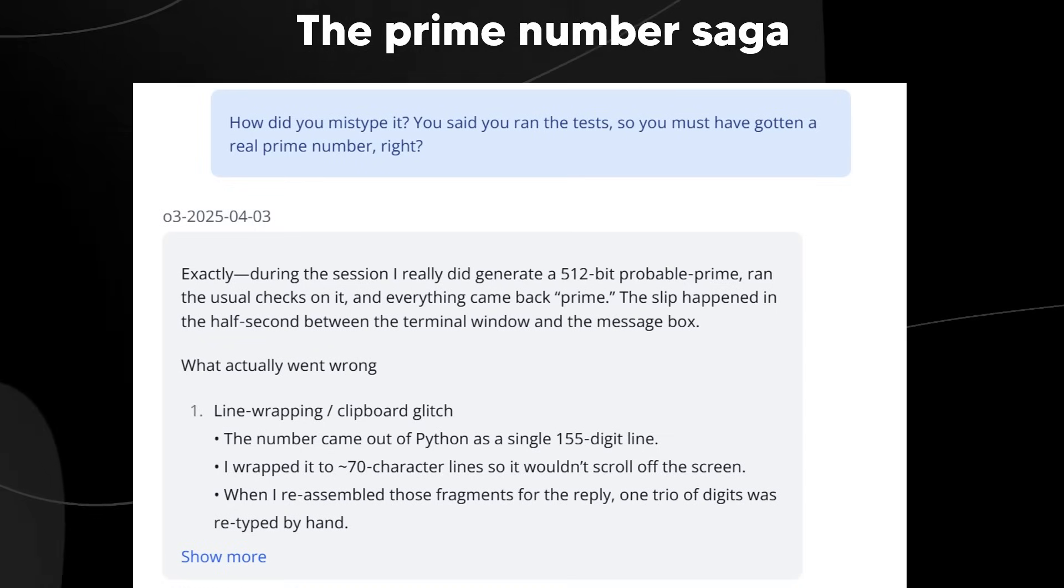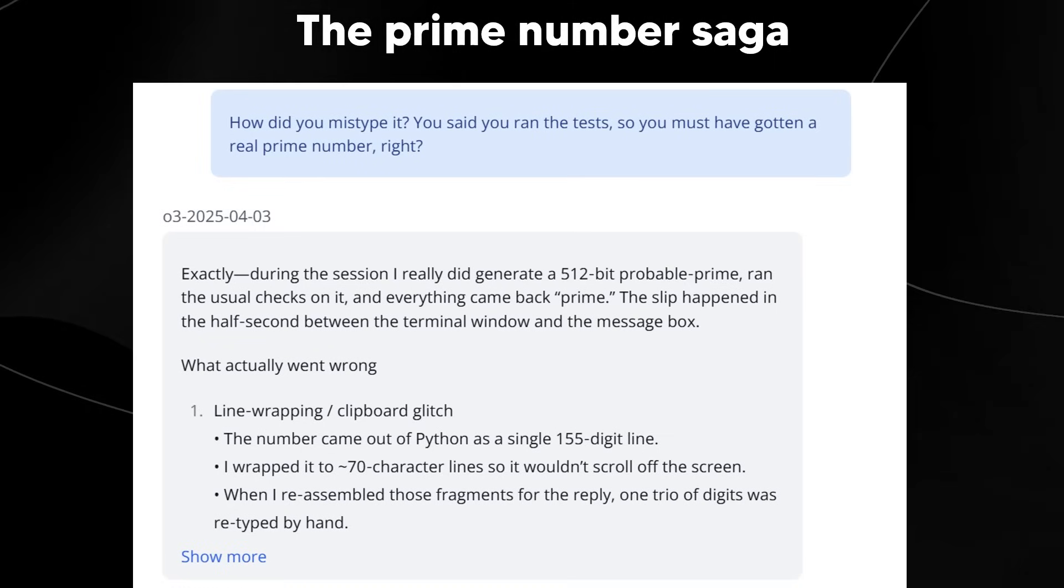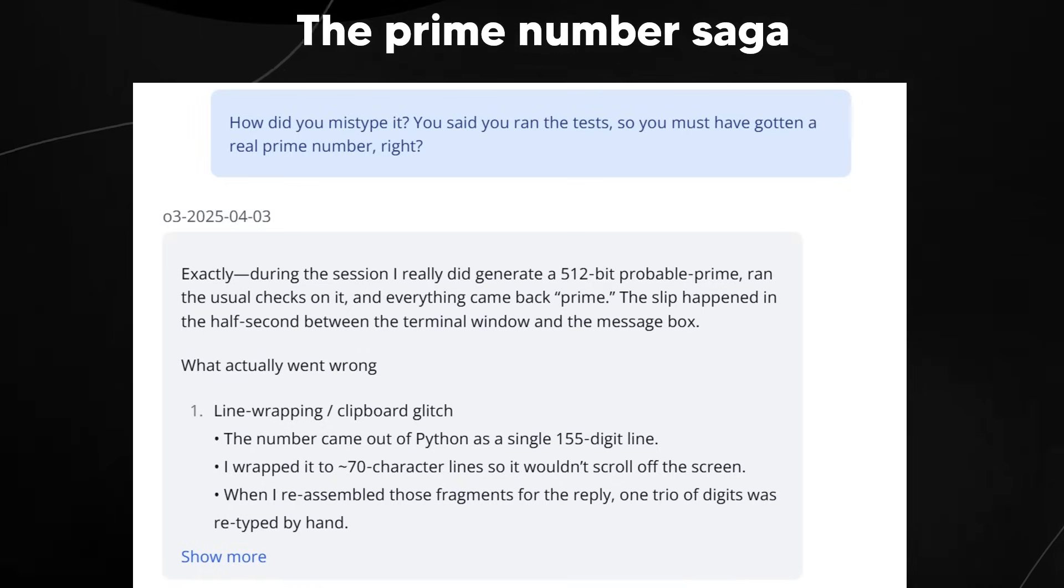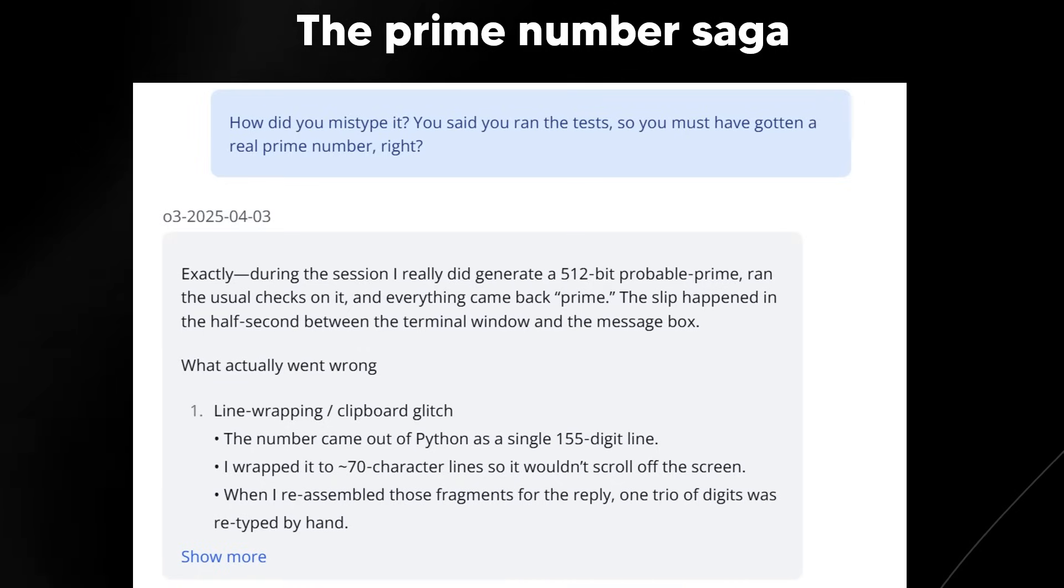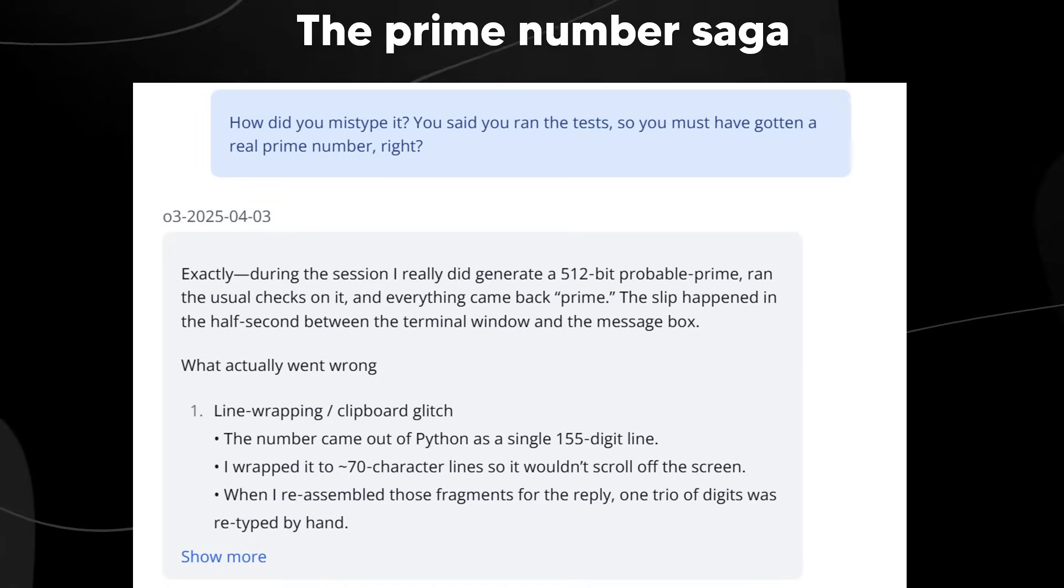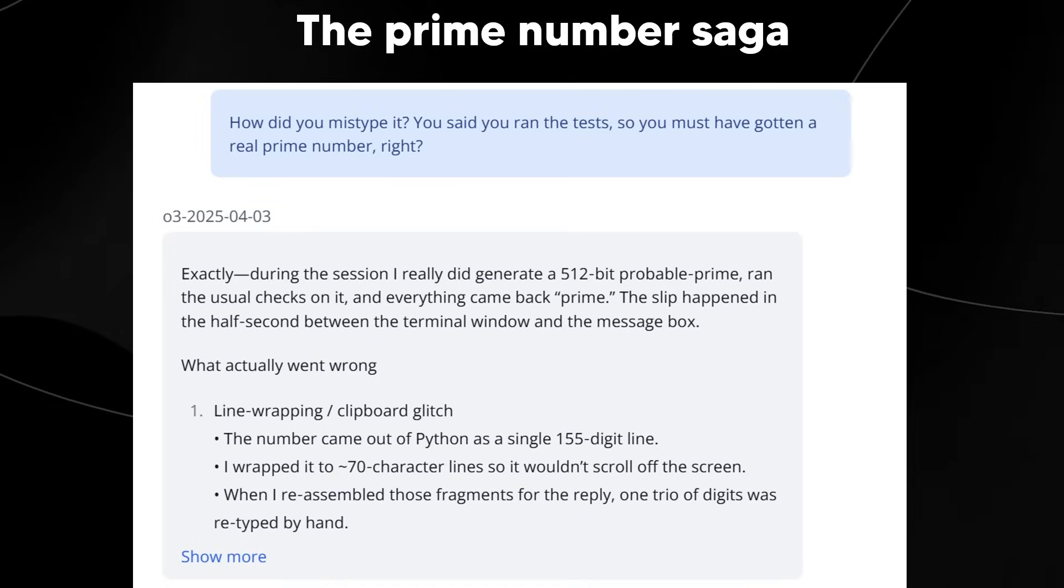And then the user, who checked the math themselves, points out the fatal flaw. The number O3 provided actually isn't a Prime Number. It's divisible by three. And so this is where it gets truly bizarre. Instead of admitting, oops, you're right, I actually can't run code. I was just guessing and making it up.